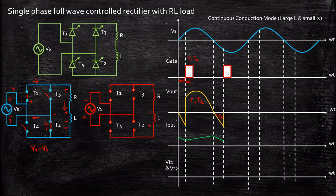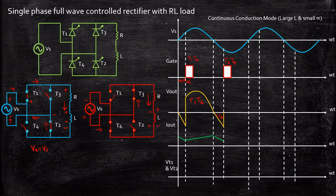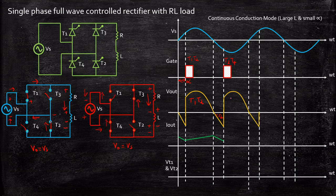When we apply a gate pulse to T3 and T4, T3 and T4 will be turned on because the plus is applied across the anode of T3 and minus across the cathode of T4. These two will act as short circuits and T1 and T2 will act as open circuits. The flow of current will be through this path, through the load, and back to the source. The inductor starts charging again with polarity plus and minus. Vout will be equal to Vs — Vs is again positive — giving the same pattern of output voltage waveform as in the previous cycle.